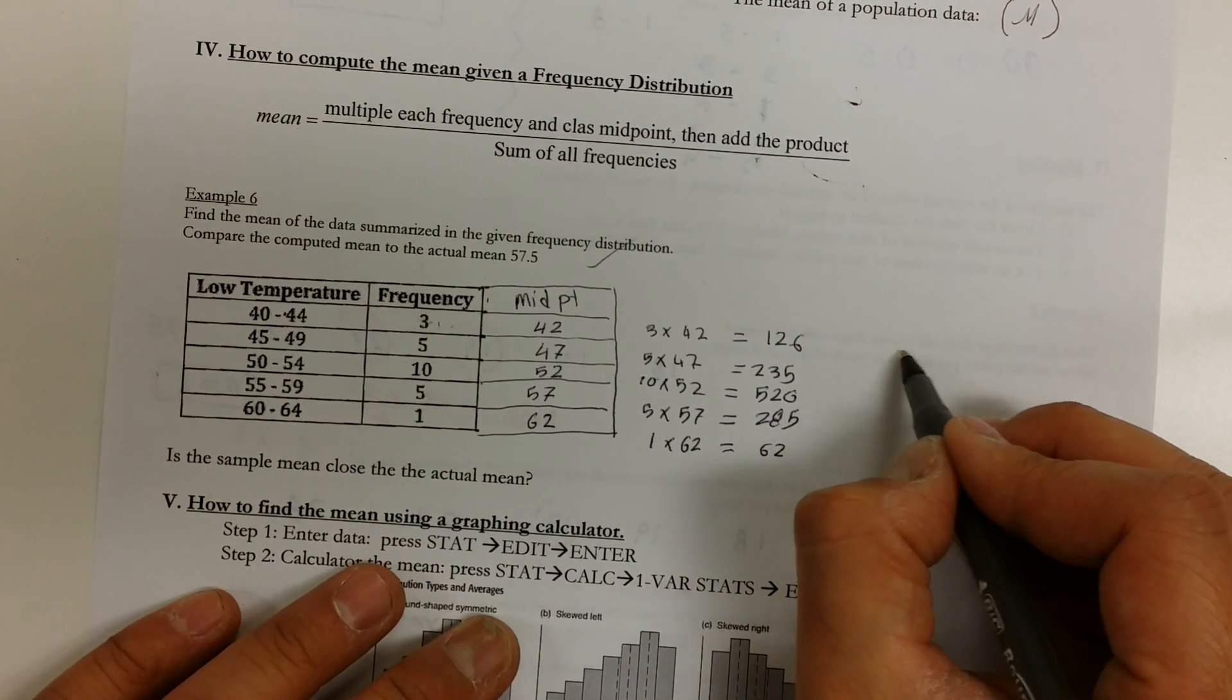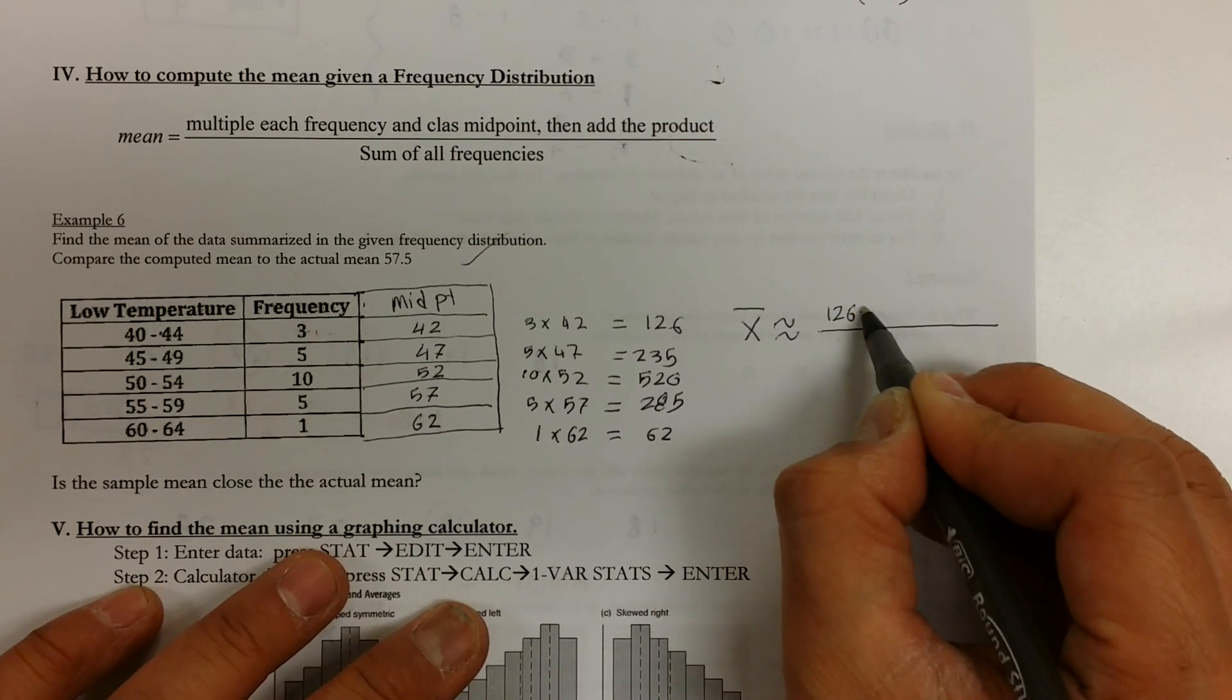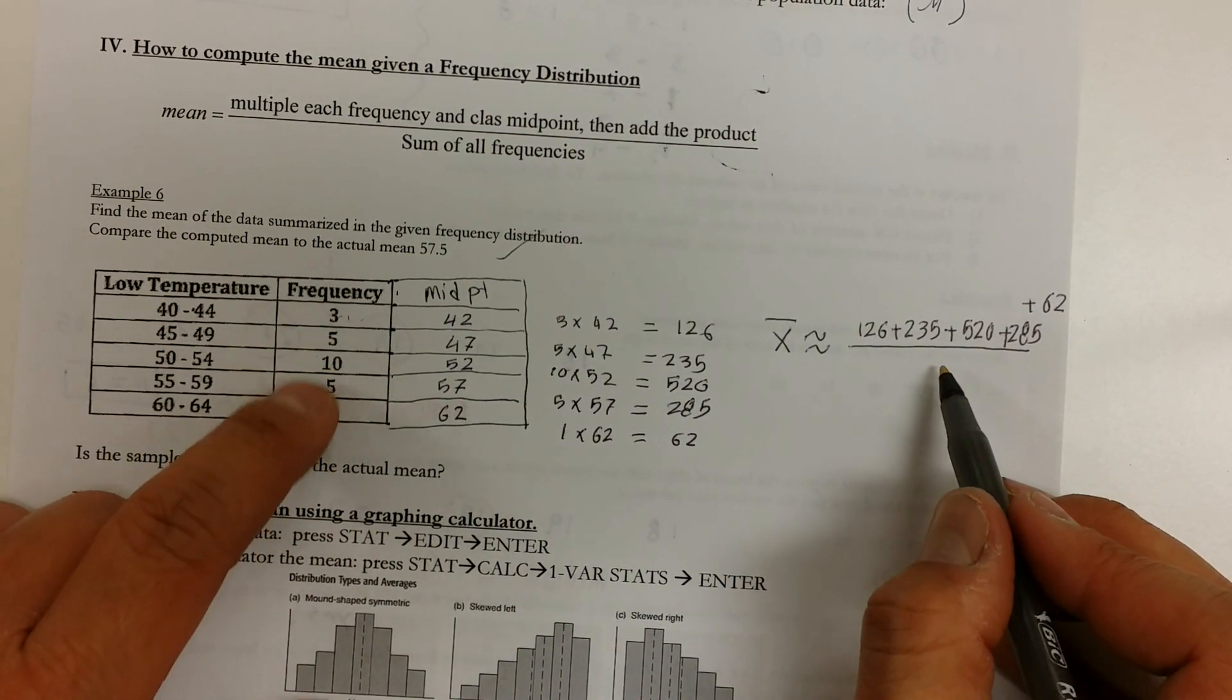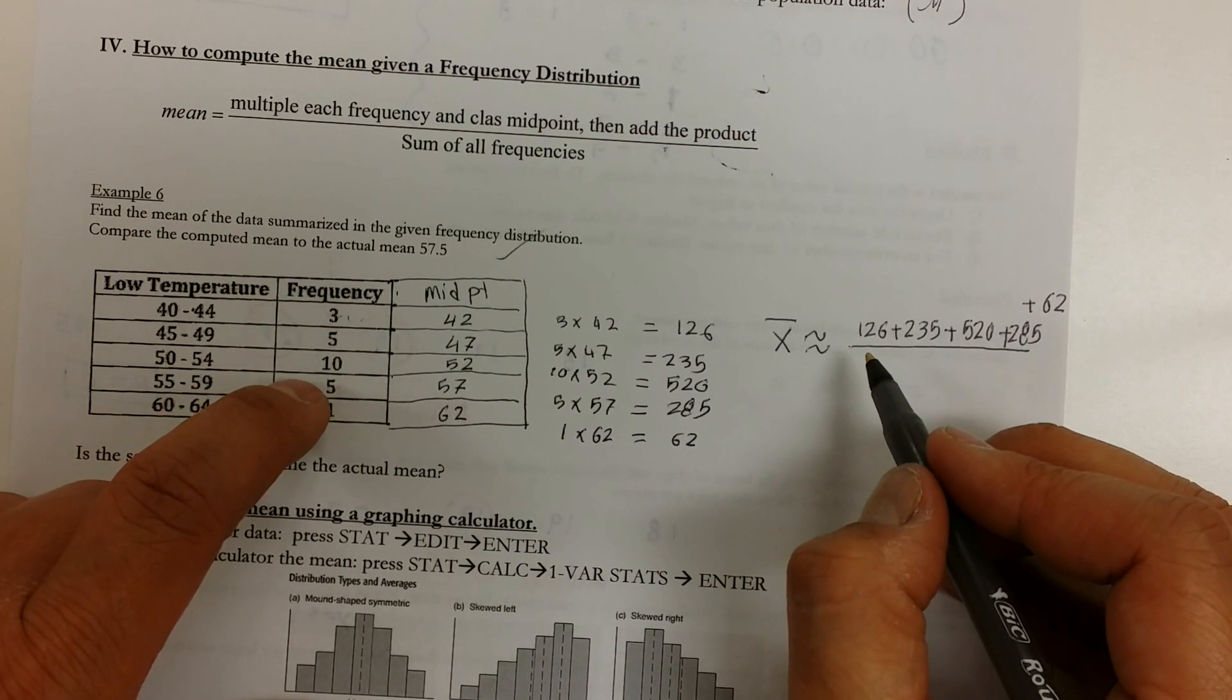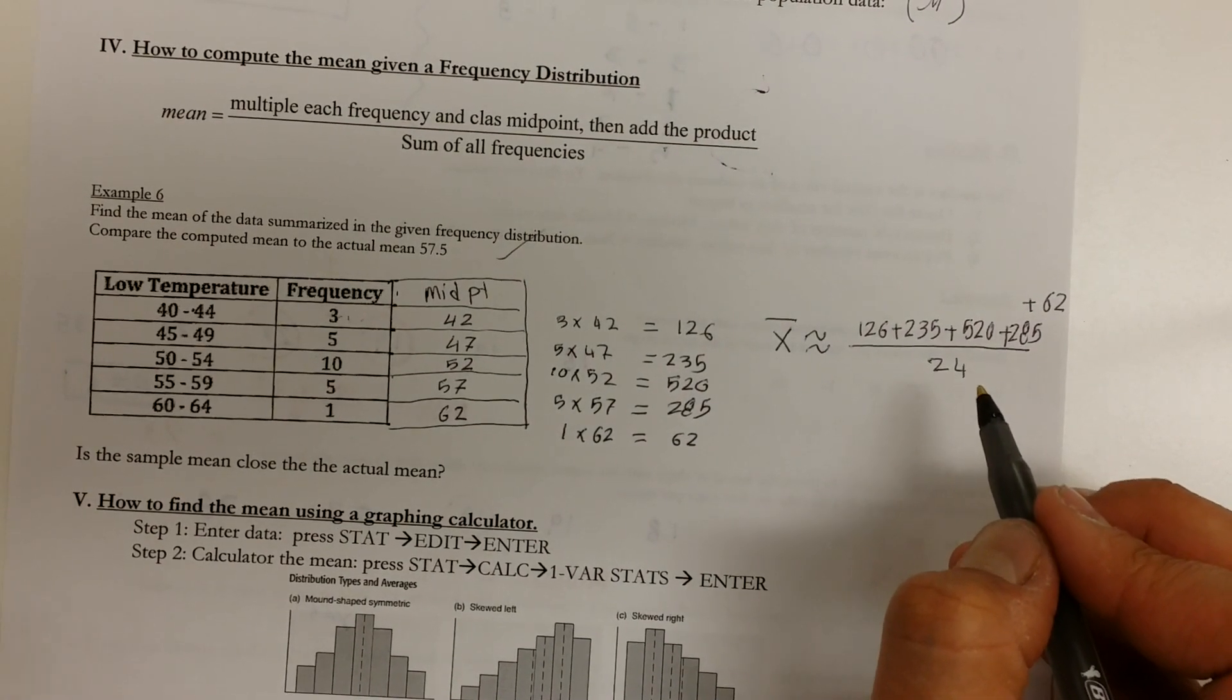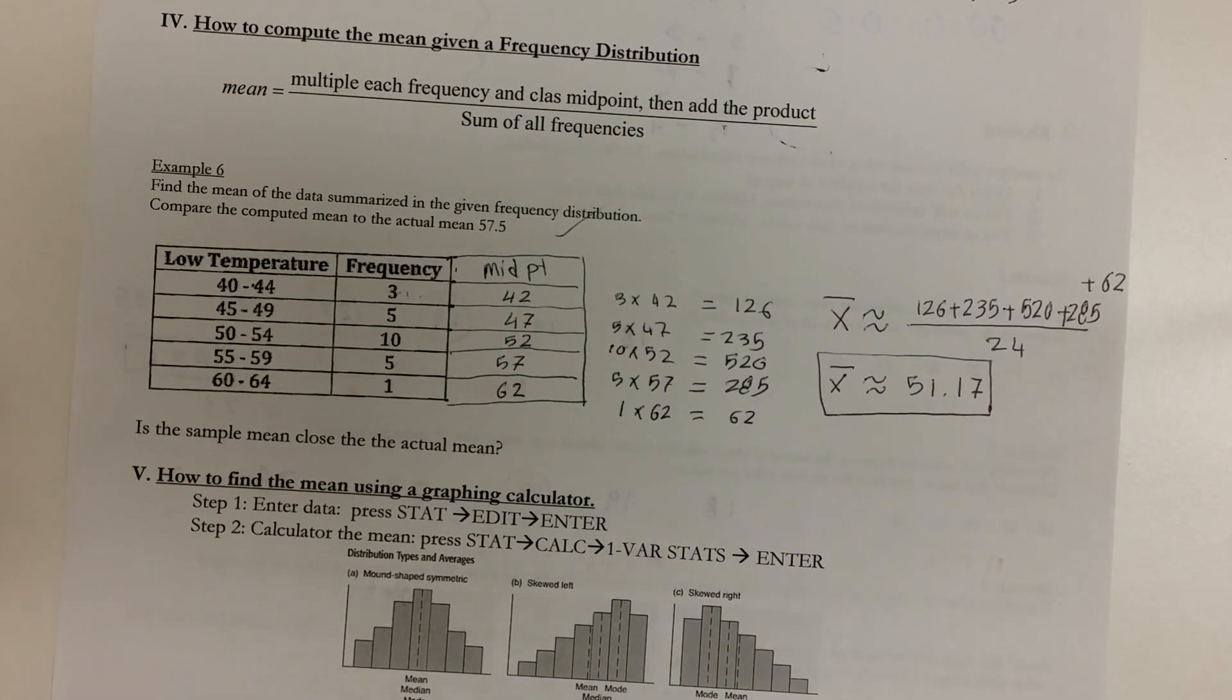I'm going to go ahead and add all these numbers up. So here's how I would represent it. The average is about, I'm going to go ahead and add all these numbers up. 126 plus 235 plus 520 plus 285 plus 62. And I'm going to divide it by the sum of the frequency. So the sum of the frequency is adding all these up. So I got about 18, 23, 24. Divide that by 24. I'm just going to do it on the calculator and see what the value is. And then give you the value. Comes out to be about 51.17.